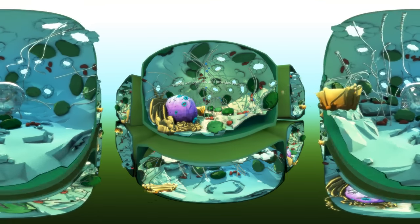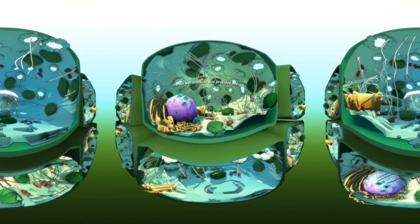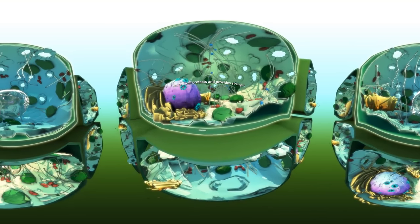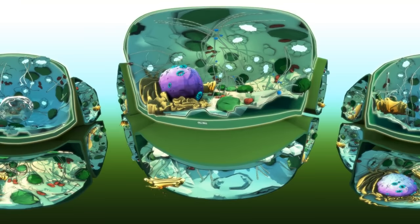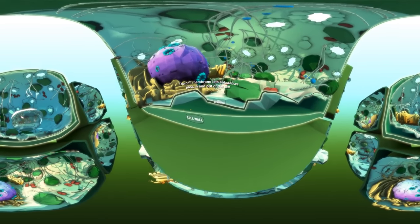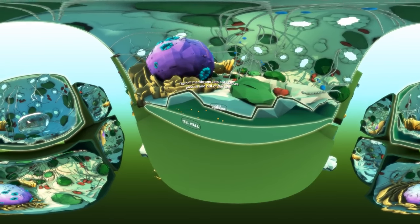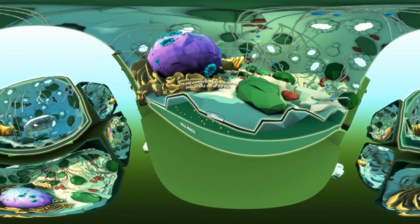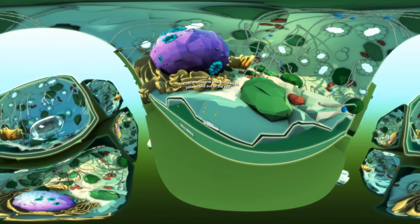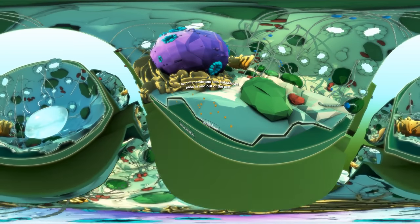To get in or out of a plant cell, you'd need to pass through the cell wall and cell membrane. The cell wall provides protection and strength for the cell, a bit like an exoskeleton, while the cell membrane lets substances pass in and out of the cell.